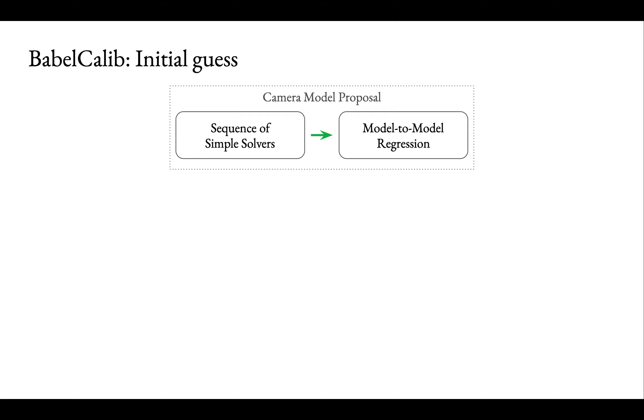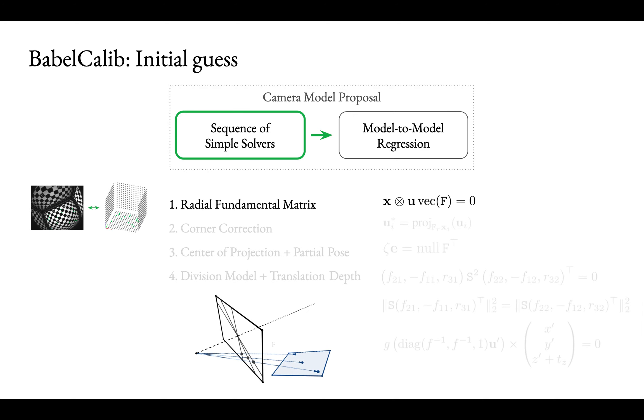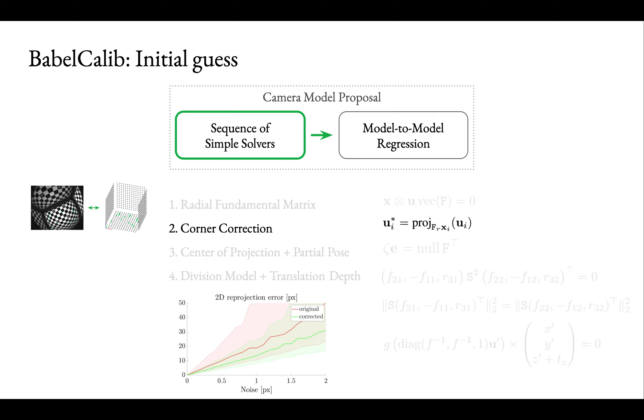We propose a method to obtain an initial guess for all critical intrinsics, which includes the projection parameters and the center of projection. The radial fundamental matrix F relates board fiducials to radial lines meeting at the center of projection and puts constraints on the camera pose. We sample a non-minimal subset of image-to-board correspondences to estimate F. We jointly refine the fundamental matrix and correct for noise in the corner detections using non-linear least squares. The corner correction substantially improves the accuracy of the downstream solvers.